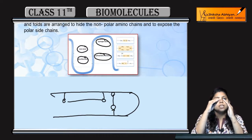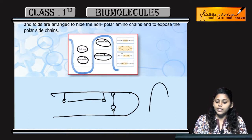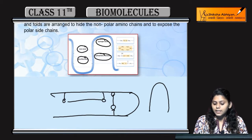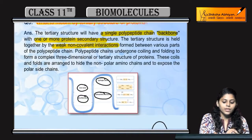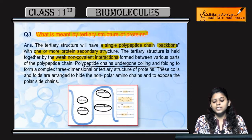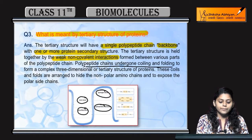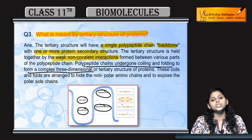जो एक primary structure है, वो coil कर जाएगी, वो folding शुरू कर देगी. यहाँ पर bonding होई, इसकी वज़ह से coiling हो गई. So, polypeptide chains undergo coiling and folding, और बनाते हैं 3D tertiary structure of a protein.